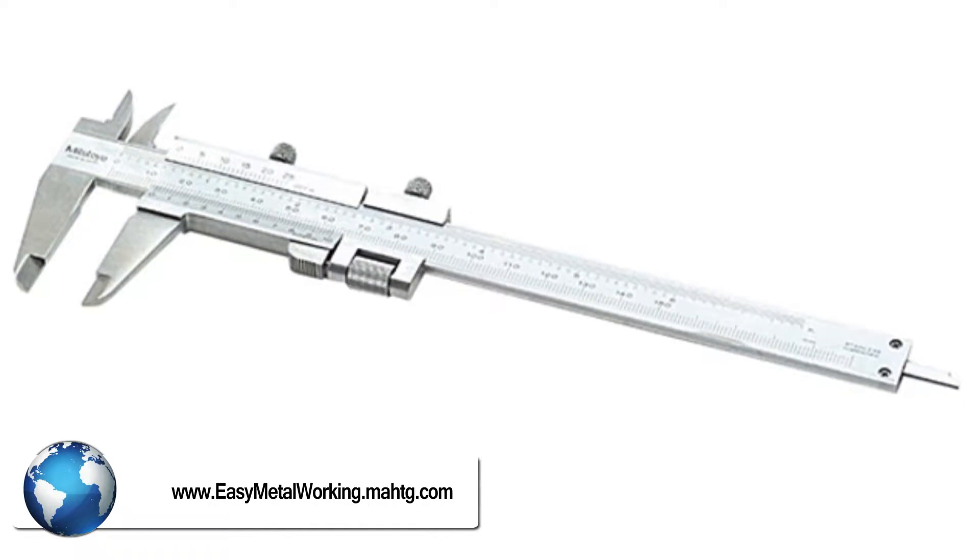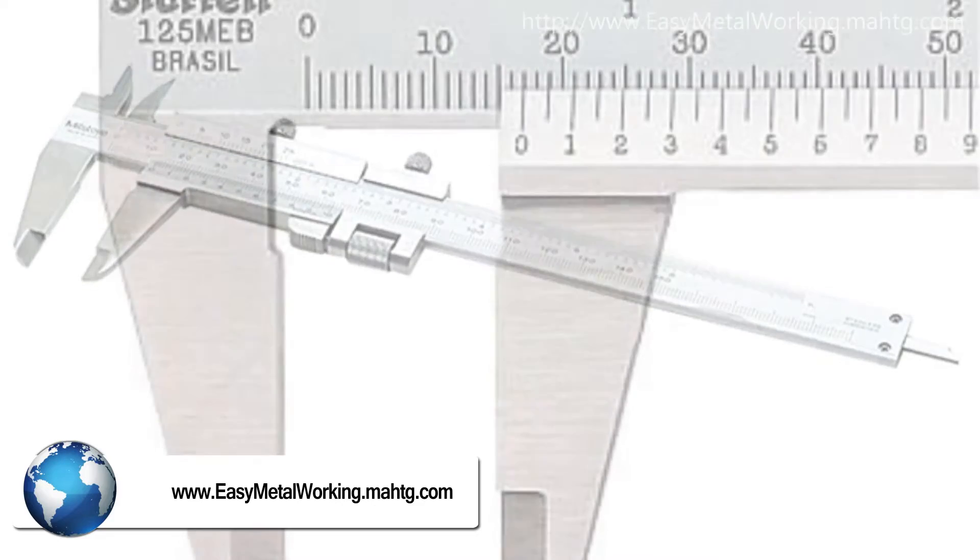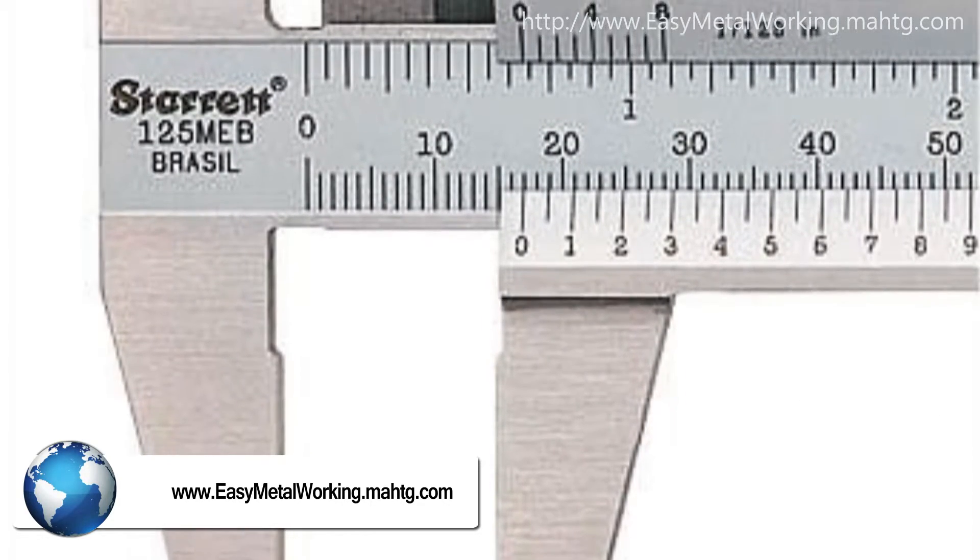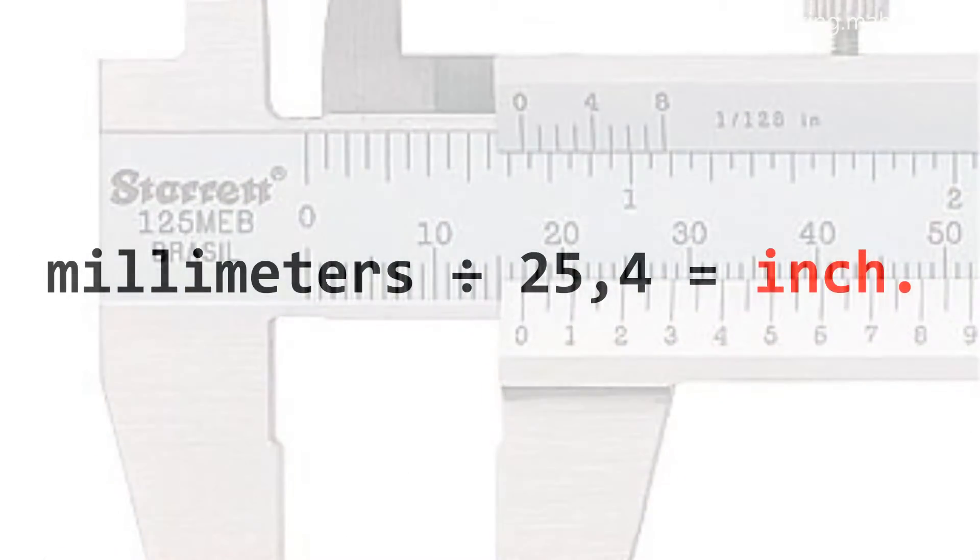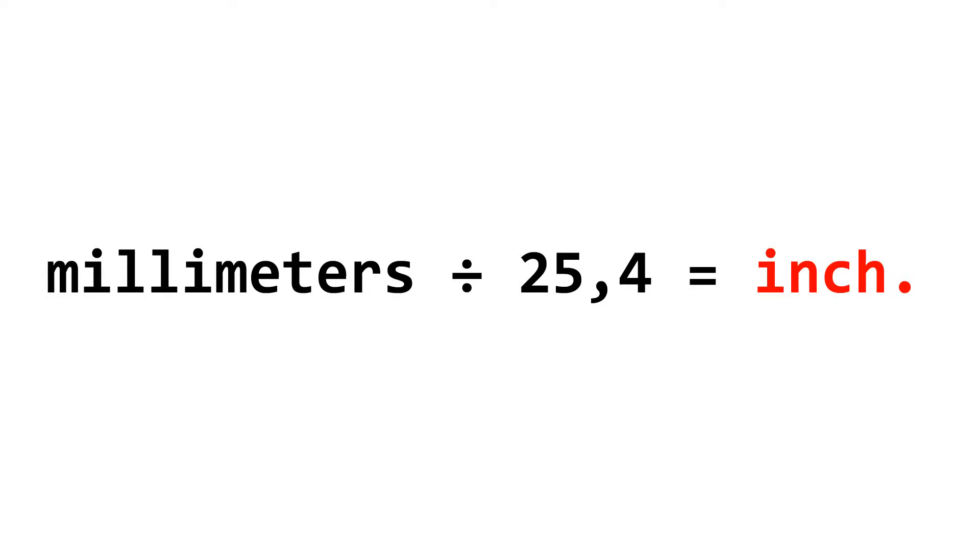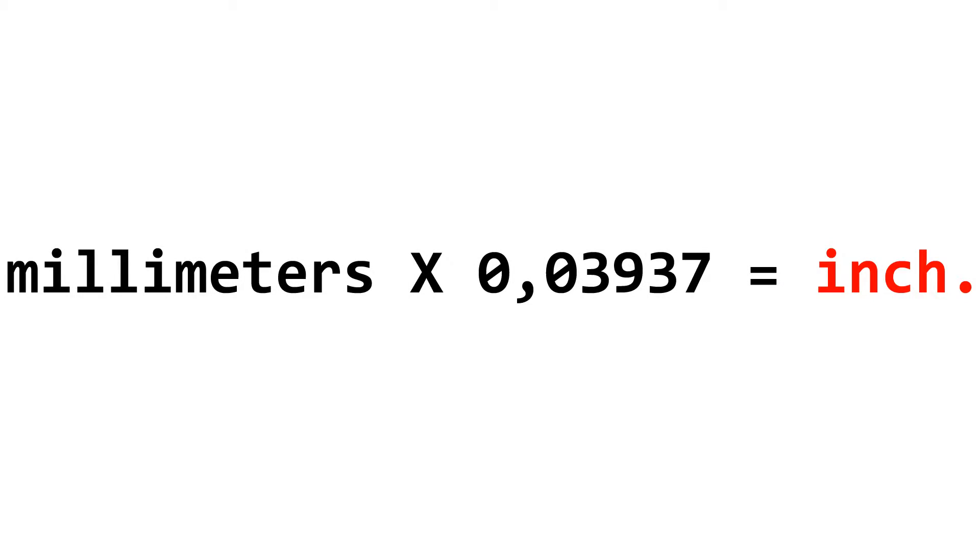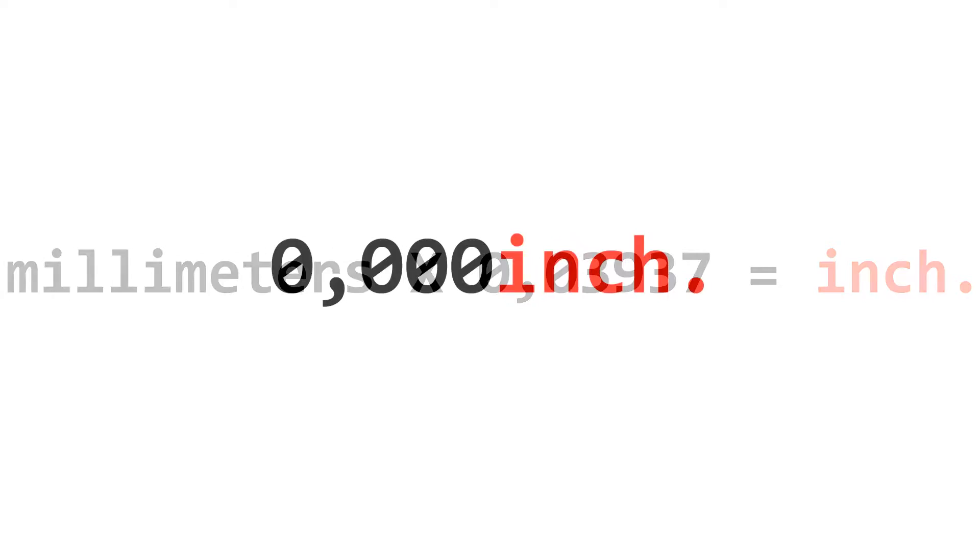As is well known, to turn a number in millimeters to inches we have two ways. First, divide millimeters by 25.4, or second, multiply millimeters by 0.03937. In both cases we will get as a result a figure in thousandths of an inch.